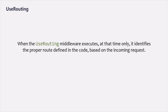When the user routing middleware executes, it identifies the proper route defined in the code based on the incoming request. What actually happens is, by the time the user routing middleware executes at runtime, before that, when the code compiles, the compiled code has enough information about all the endpoints defined in the code — for which URL, which middleware should be executed, which endpoint should be executed.